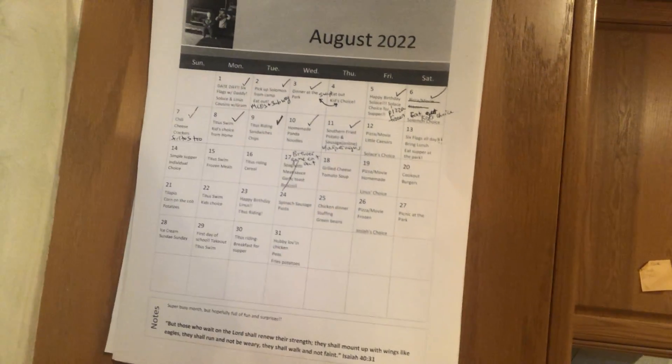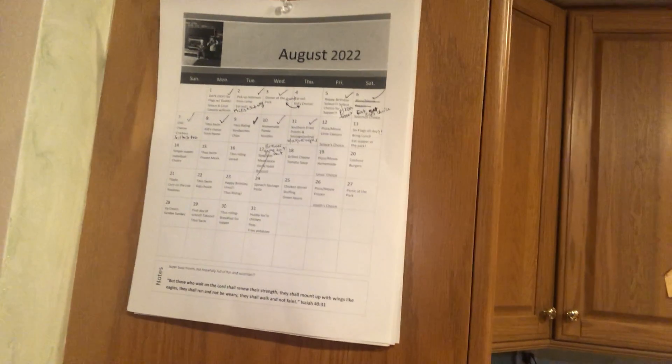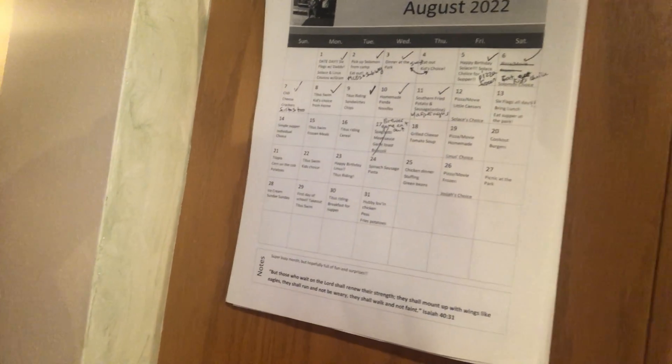Sorry for the noise in the background — this is home life with five children! I have a bunch of menus saved. One issue with Word is that when I type everything in and then close it, it goes blank and I have to retype everything, so if anyone has a solution to that, I'd love to know.